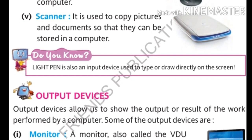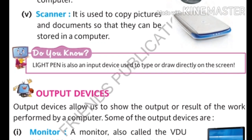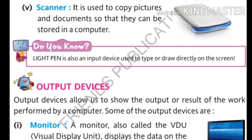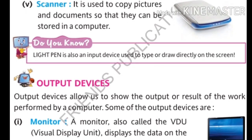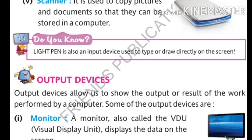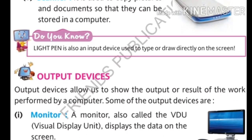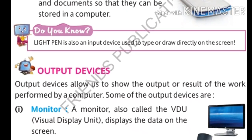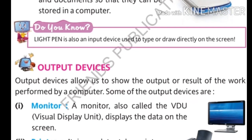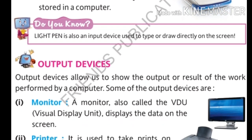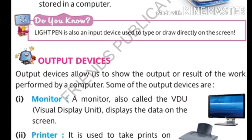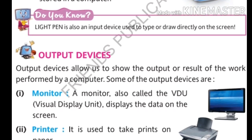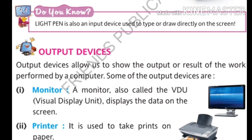Next is the light pen. The light pen is also an input device because we use it to type or draw directly on the screen. Now the next type of devices are output devices. Output devices allow us to show the output or result of the work performed by a computer. Output means we are getting something from the computer. The devices which provide output to us are called output devices. The first output device is the monitor.